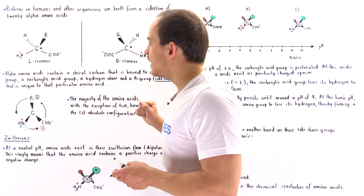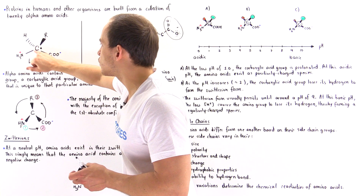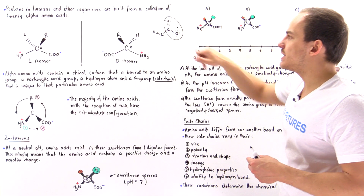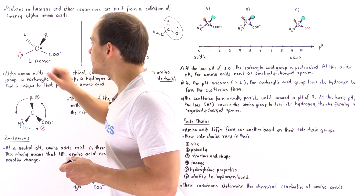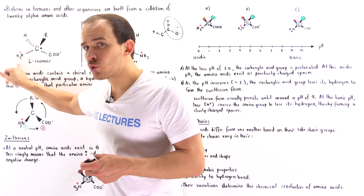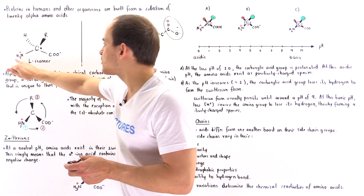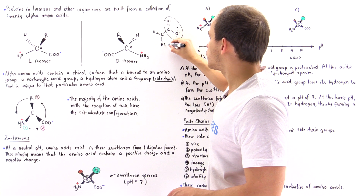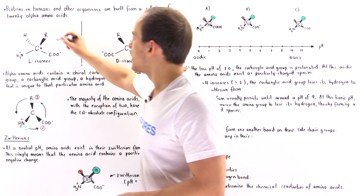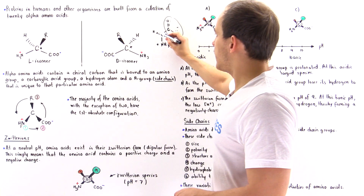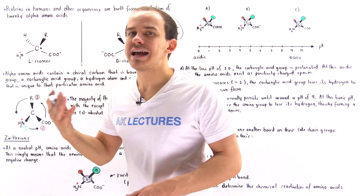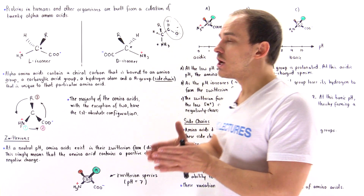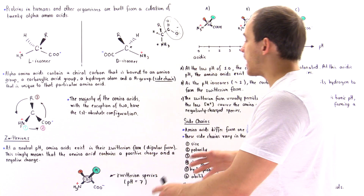An alpha amino acid is a molecule that contains a center alpha carbon with a deprotonated carboxylic acid group. Additionally, the other group attached to this center alpha carbon is a protonated amino group carrying a positive charge. The third group is an H atom — the alpha H atom — and the final group is a side chain, also called the R group, which differs from one amino acid to another.